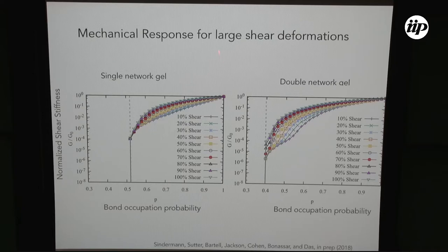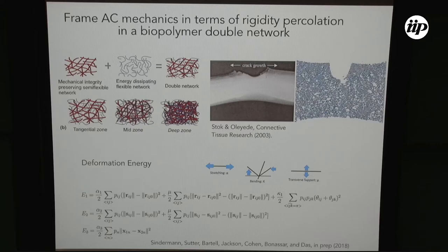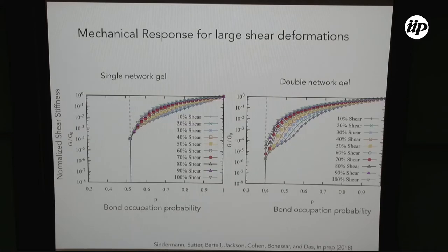With this model, we can compare the shear stiffness as a function of bond occupation probability for the single network in a gel versus the double network in a gel. My energies are still quadratic but not linearized as in the previous case. Looking at the normalized shear stiffness as a function of bond occupation probability, as I increase the shearing, there is stiffening of the network — this is true for both the single and double network, but more pronounced for the double network. Also, the rigidity percolation threshold in the double network is shifted to the left compared to the single network, because we have extra constraints since the networks are connected.